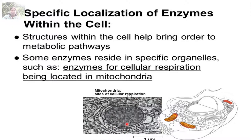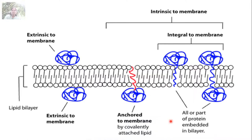This is an electron micrograph picture of mitochondria where you can see the enzymes actively engaged in cell respiration. This picture shows the presence of enzymes outside the membrane, inside the membrane, and also anchored within the lipid bilayer. Proteins outside the membrane are extrinsic; those integral to the membrane are intrinsic membrane proteins, with part on the extrinsic side and part inside the cell. Some proteins are covalently attached to the phospholipid bilayer.